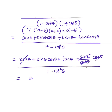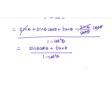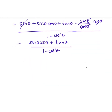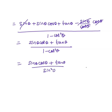We get sin θ cos θ plus tan θ divided by (1 minus cos squared θ). Now, what is 1 minus cos squared θ? It equals sin squared θ. So we write sin θ cos θ plus tan θ divided by sin squared θ.